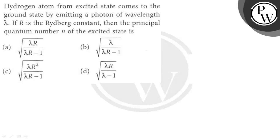Hello everyone, let's see the question. The question says a hydrogen atom from an excited state comes to the ground state by emitting a photon of wavelength lambda. If R is the Rydberg constant, then the principal quantum number n of the excited state is?